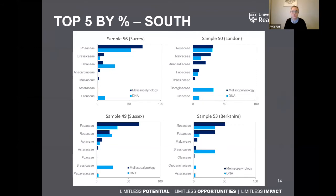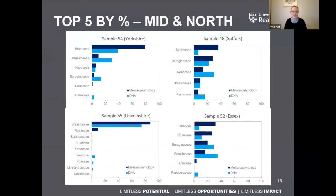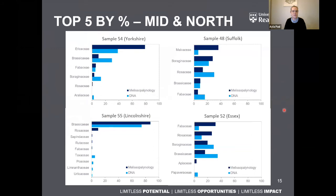The same is true for the other four samples — from mid and north: Yorkshire, Suffolk, Lincolnshire, and Essex. Lincolnshire is very much an example where both methods agree on the dominant family, with a few extras identified differently. Yorkshire was a heather honey, which the Melissopalynology identified mostly as one family, whilst the DNA didn't pick it up at as high a percentage. So it's interesting to see how all eight differ considerably but still show similarities — though neither method alone can be used as the true representation of pollen types present in the sample.